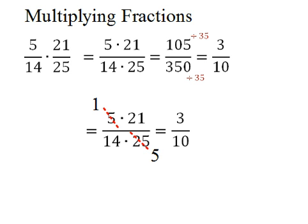A much easier way is to reduce before you multiply across the top and bottom. Here I can see that there's a 5 on top and a 25 on bottom. They have a GCF of 5, which reduces these to 1 and 5 after dividing by the GCF. I can also reduce the 21 over 14 by dividing by their GCF, which is 7. That leaves 3 over 2.